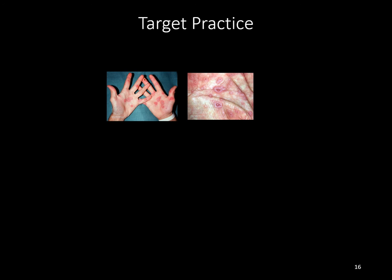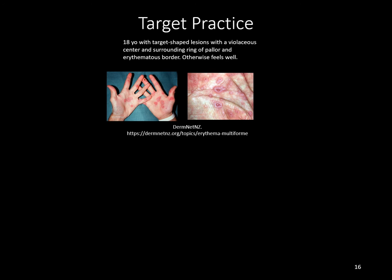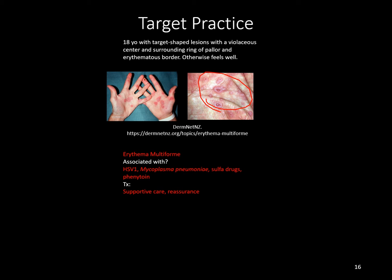Targetoid lesions: an 18-year-old male with target-shaped lesions having a violaceous center, surrounding ring of pallor, and erythematous border is most consistent with erythema multiforme. High-yield associations include HSV-1 and Mycoplasma pneumoniae, and a few drugs including sulfa drugs and phenytoin. Treatment involves supportive care and reassurance — this typically resolves spontaneously.